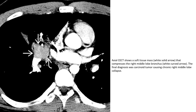Contrast-enhanced CT shows a soft tissue mass, indicated by wide slit arrow, that compresses the right middle-lobe bronchus, indicated by wide curve arrow. The final diagnosis was carcinoid tumor causing chronic right middle-lobe collapse.